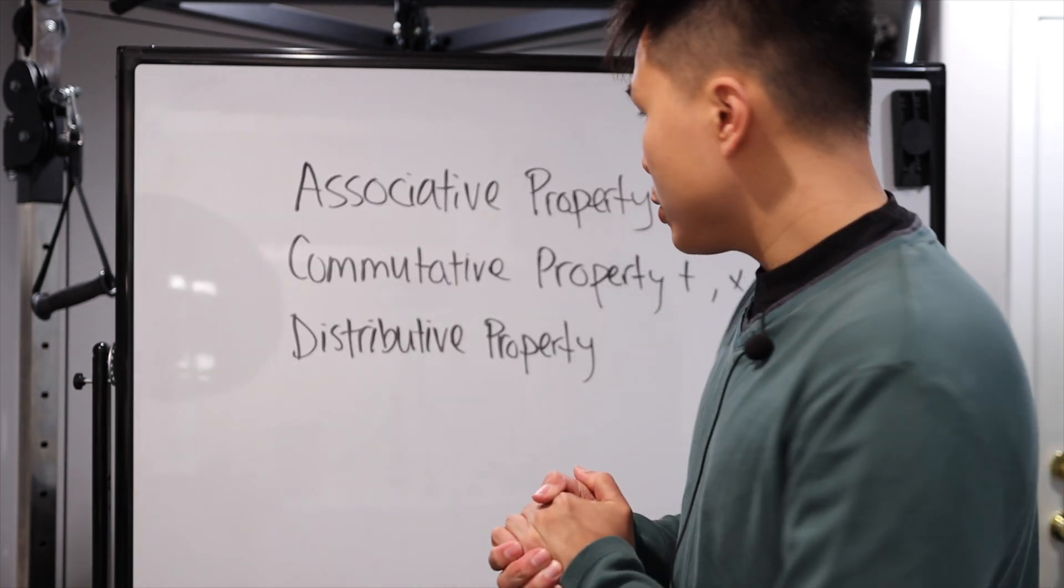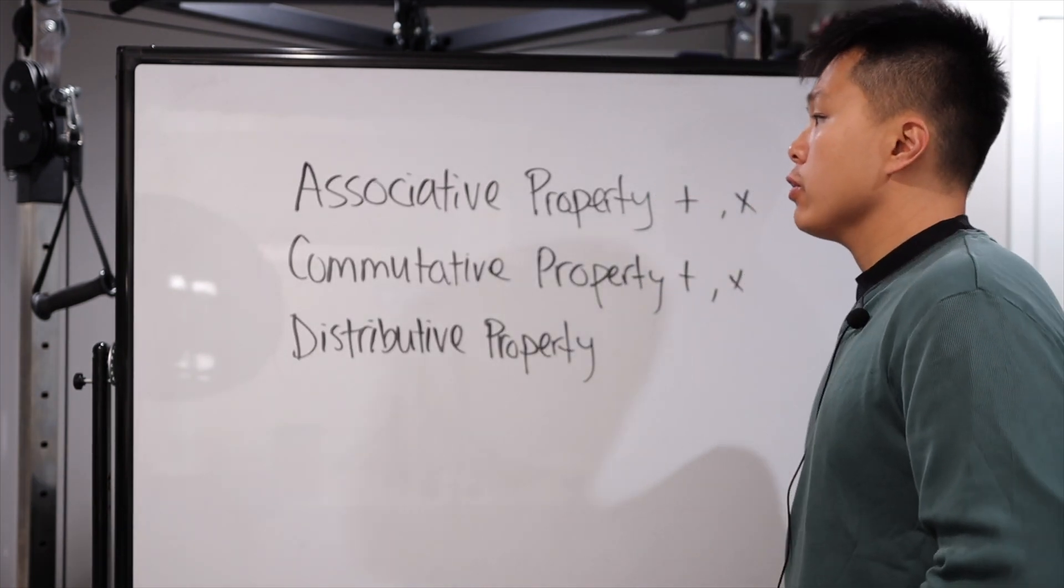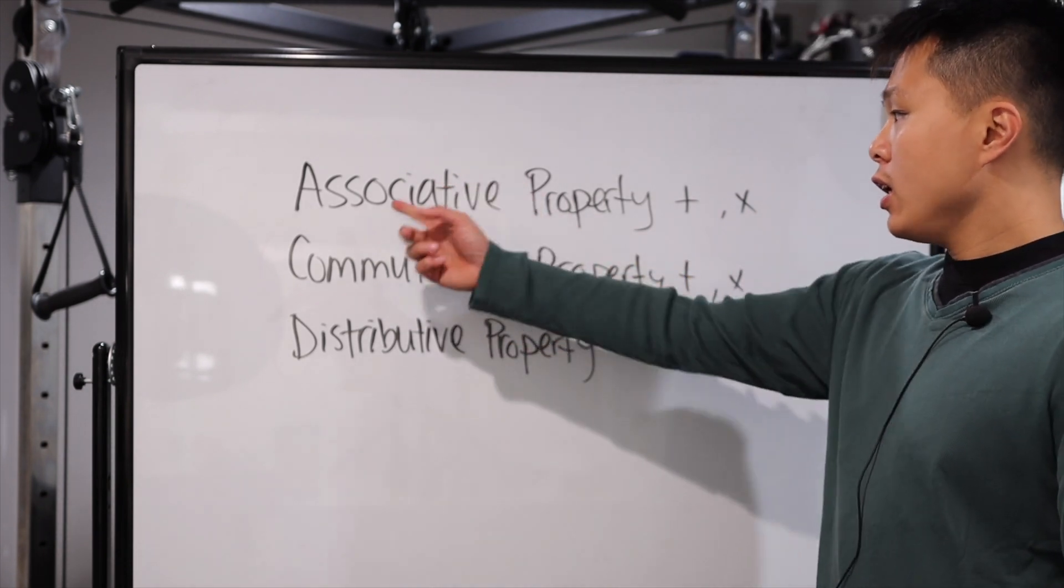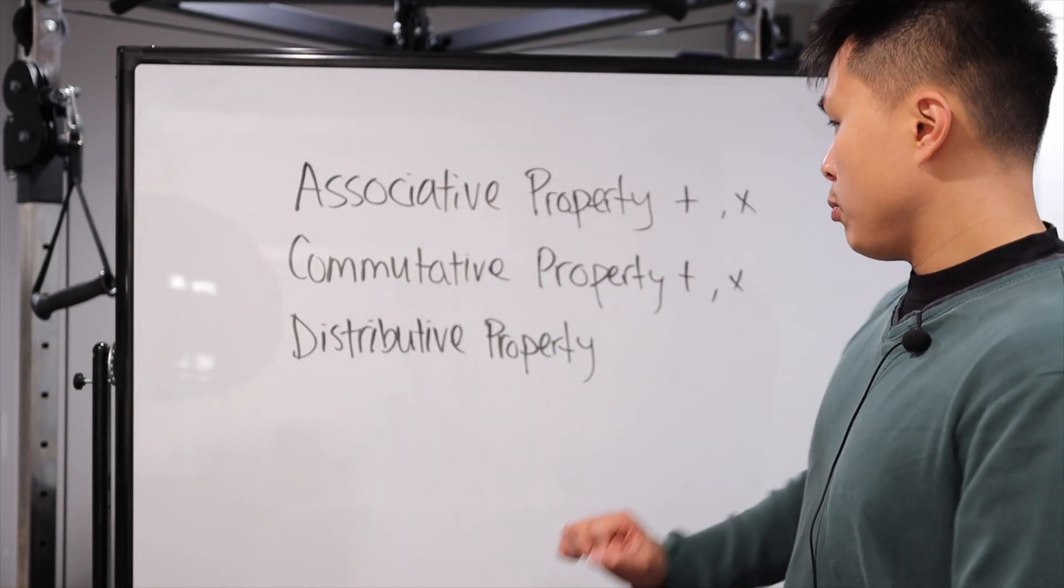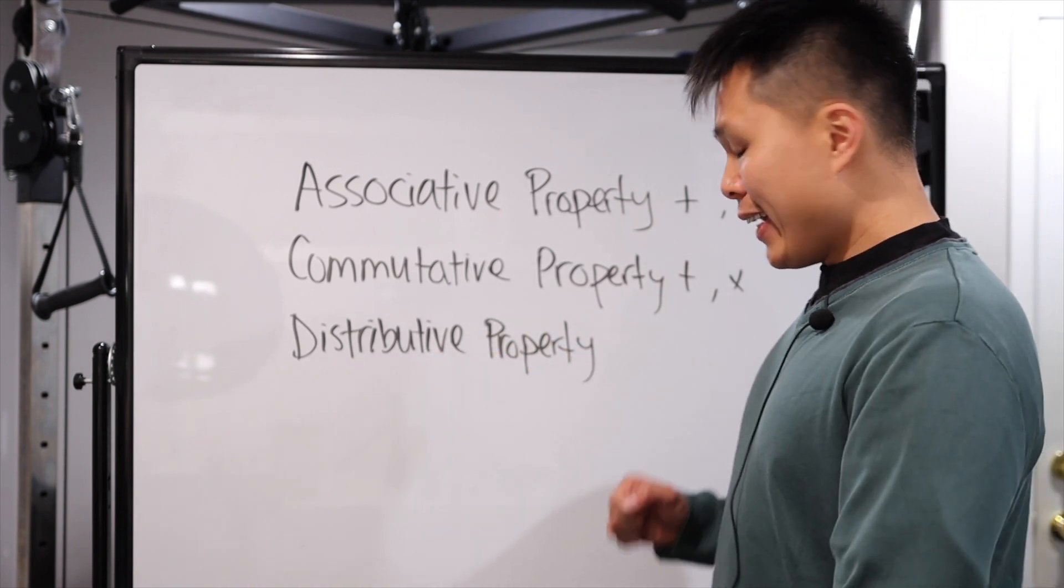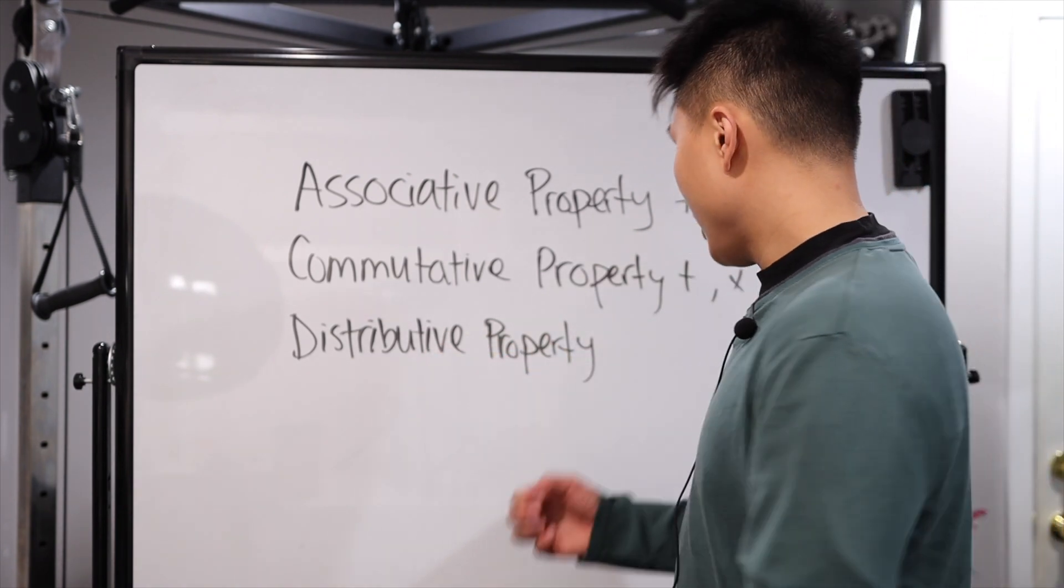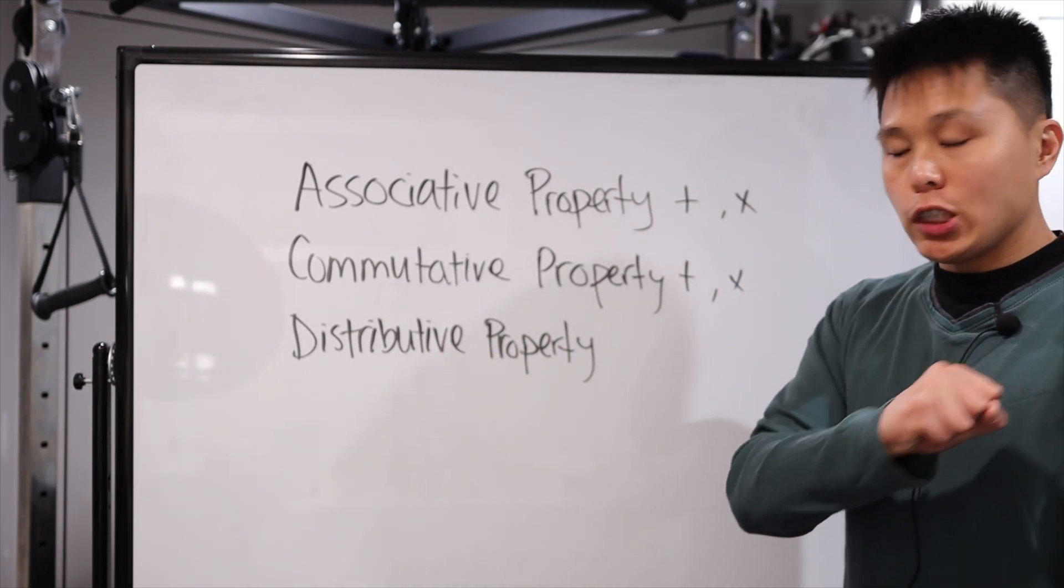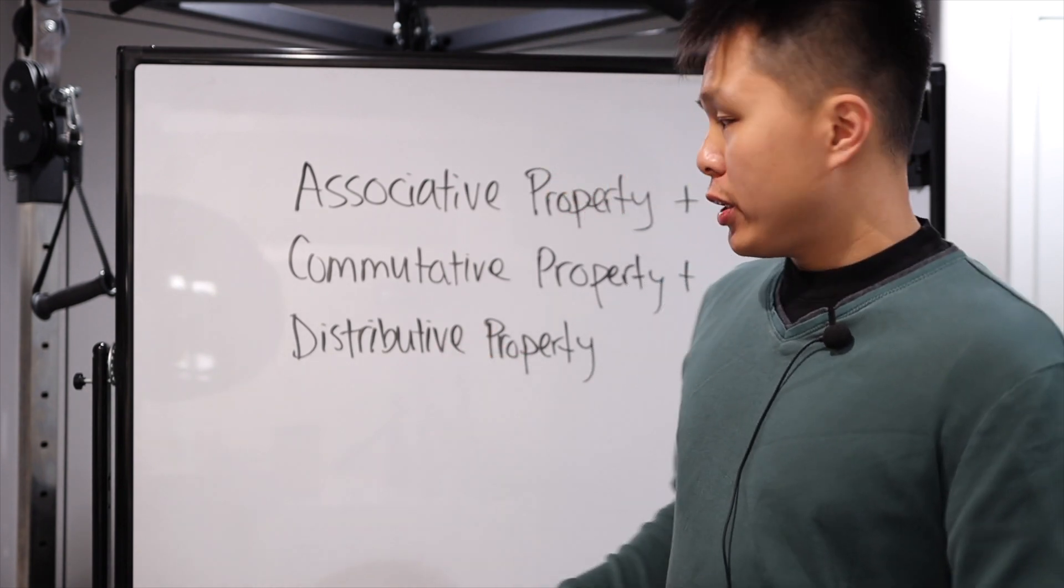So let's talk about two different things before we end this video. The first one is, well, here's all five properties: associative property of addition and multiplication, commutative property of addition and multiplication, and distributive property, which, well, as we mentioned, it's a combination of addition and multiplication. Now, how to remember this?